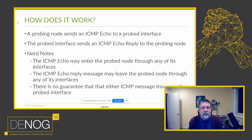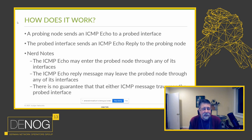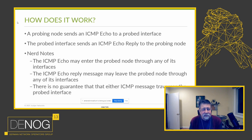A probing node sends an ICMP echo to a probed interface, and the probed interface sends an ICMP echo reply back to the probing node. Some nerd notes: the ICMP echo message may enter the probe node through any of its interfaces, and the echo reply may leave the probe node through any of its interfaces. So there is absolutely no guarantee that either ICMP message traversed the probed interface. For example, if you're pinging interface three, the echo request can go in through interface one, the reply can leave through interface two — but interface three must be reachable.